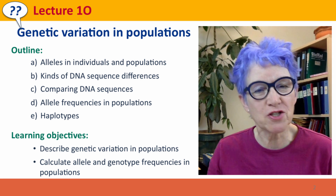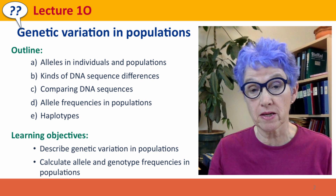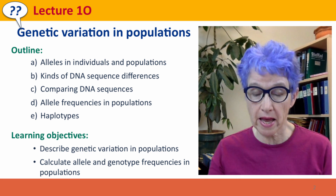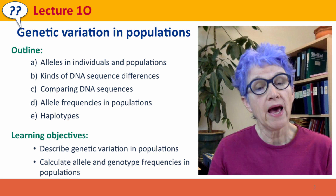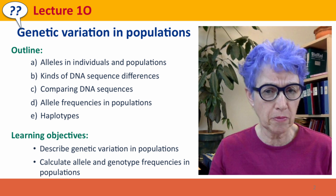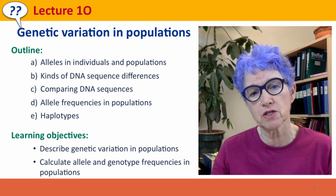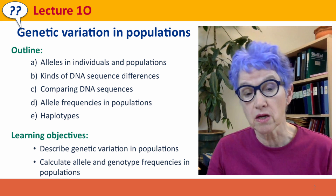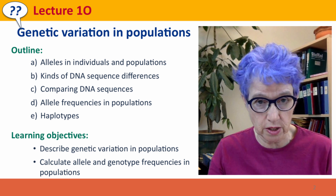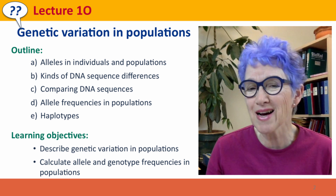Hi, everyone. Welcome back to Useful Genetics. This is Lecture 1-0, where we're finally getting back to talking about genetic variation in populations. We'll talk about alleles and genotypes in individuals and populations, and we'll consider kinds of DNA sequence differences. We'll talk about how we compare DNA sequences, and we'll think about allele frequencies and genotype frequencies in populations, introducing new terms and a new concept — the concept of a haplotype, which is a kind of genotype.